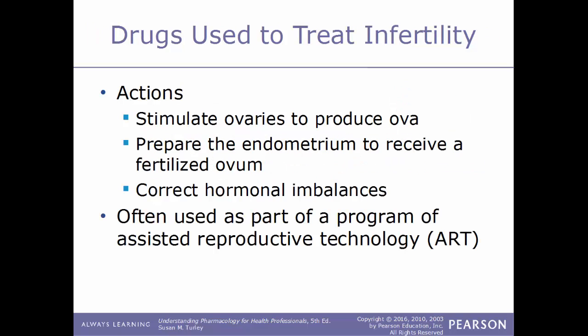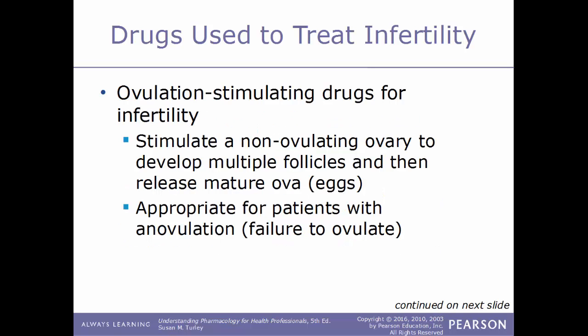Now we'll talk about drugs used to treat infertility. In general, these drugs stimulate the ovaries to produce ova, prepare the endometrium to receive a fertilized ovum, and correct hormonal imbalances. These are often used as part of a program of ART, Assisted Reproductive Technology. The first kinds are ovulation-stimulating drugs, which stimulate a non-ovulating ovary to develop multiple follicles and release mature eggs.